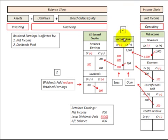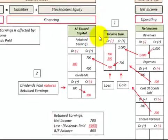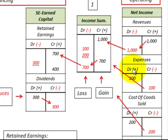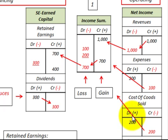First let's look at how net income affects retained earnings. We have some revenues — say we had an increase in revenues, a credit amount, so that flows into an income summary account. Then we take our expenses; in this case we had an increase in expenses of $100, and that flows into the income summary account. We also take cost of goods sold — another expense — in this case an increase of $200, so we move that into the income summary account.